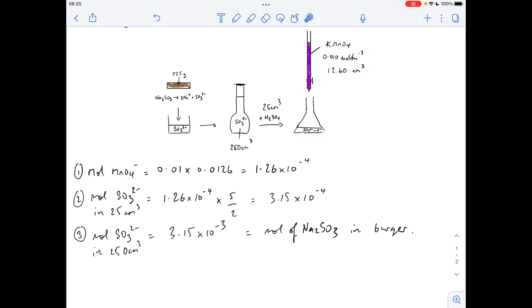Next thing we'll do is work out the moles of sulphite ions in the volumetric flask, which is a nice easy multiply by 10 because 25 was a tenth of the original solution. So that's 3.15 times 10 to the minus 3.